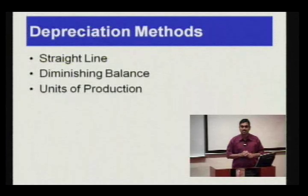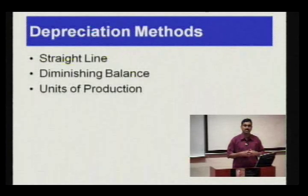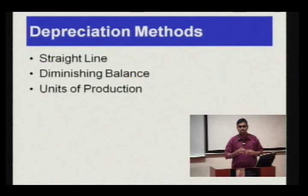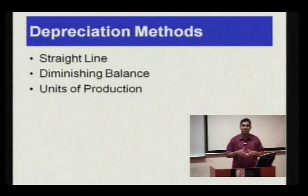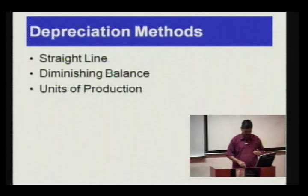The methods of depreciation — IAS 16 says the choice is given to the company. The methods can be the straight line method, the diminishing balance method, or the units of production method.